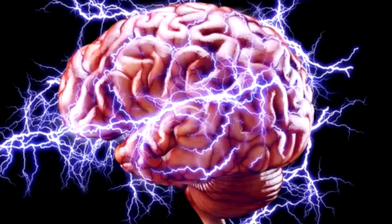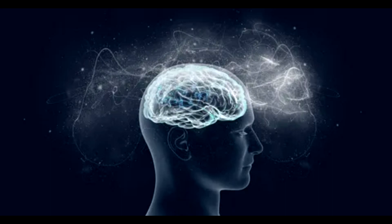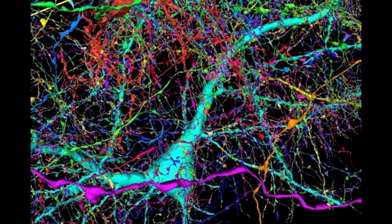The researchers found many new types of neurons, cells that use electric signals and chemicals to process information. But neurons make up only about half the cells in the brain. The other half are far more mysterious.